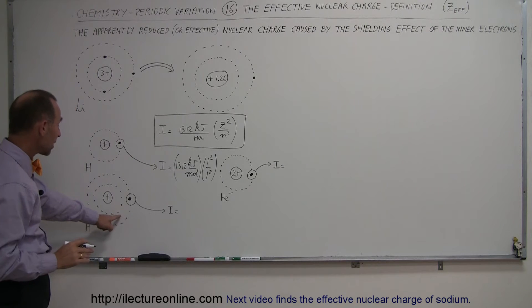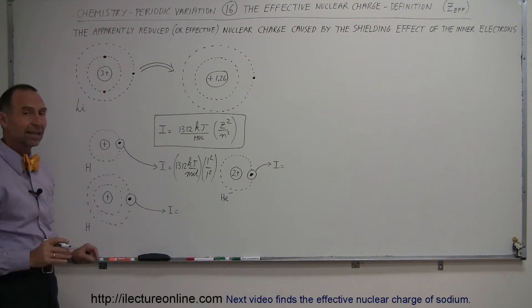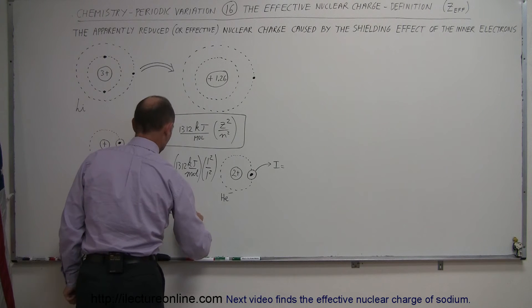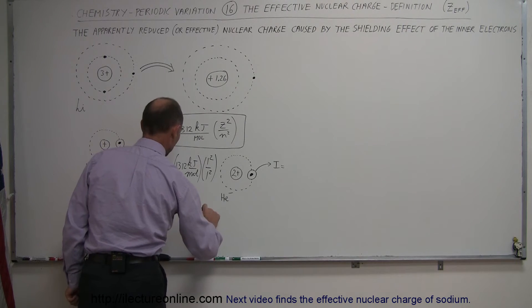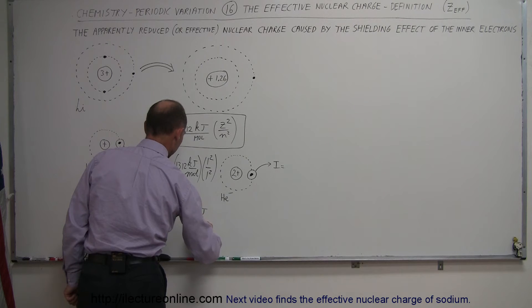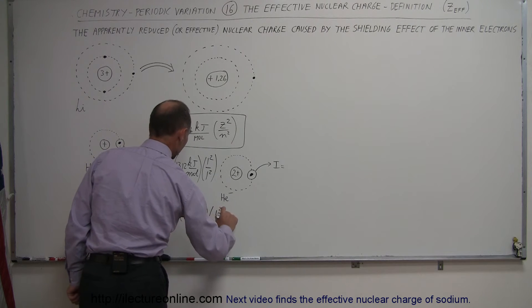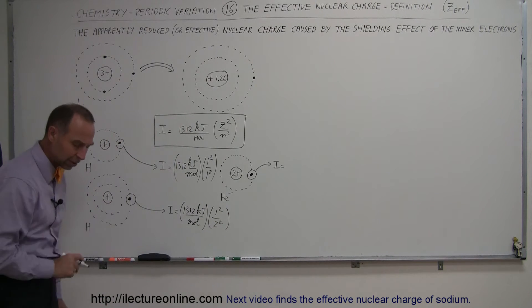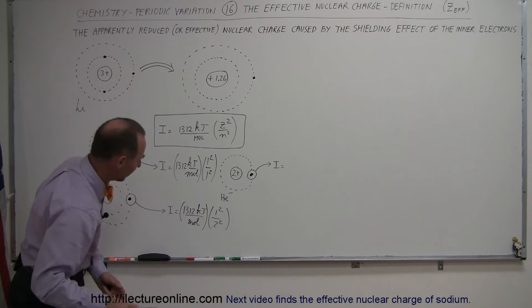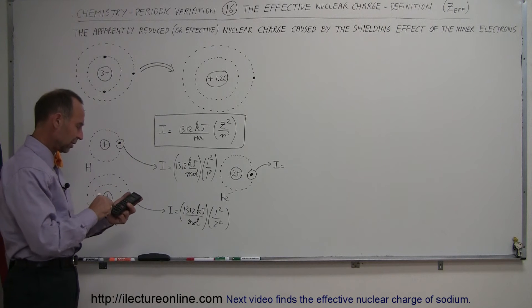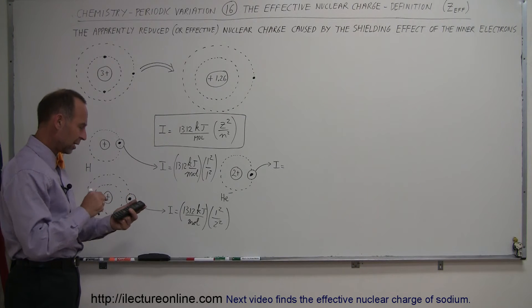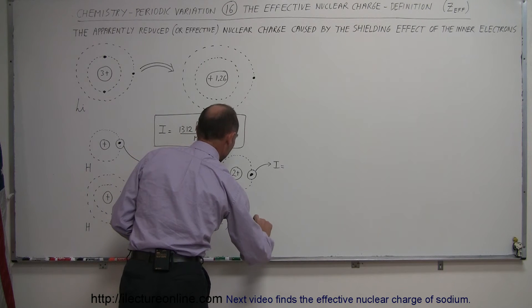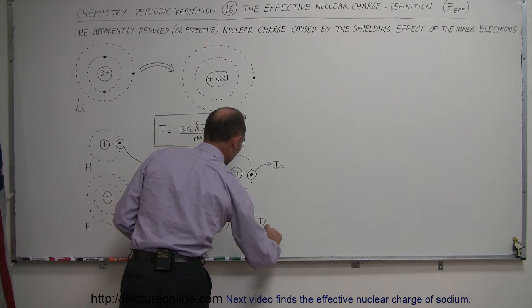If the electron is in the second energy level, n = 2 and Z = 1, so we get 1312 × 1²/2² = 1312 divided by 4, which equals 328 kilojoules per mole. Notice that removing an electron from the second energy level of hydrogen requires only one-quarter of the energy needed to remove it from the first level.